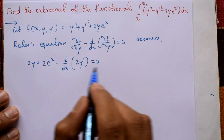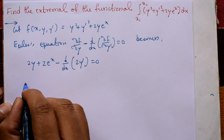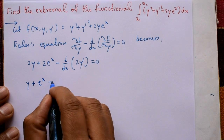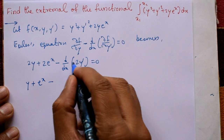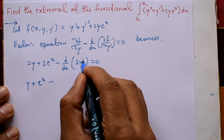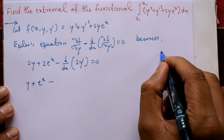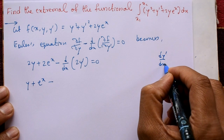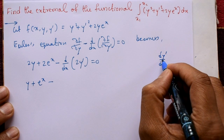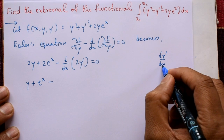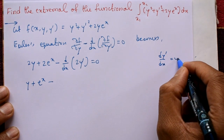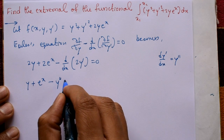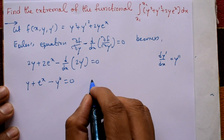Dividing through by 2, we get y plus eˣ minus d(y')/dx equals 0, and d(y')/dx is the second order term y'', so this becomes y plus eˣ minus y'' equals 0.